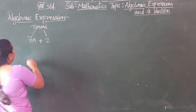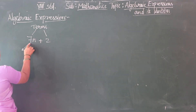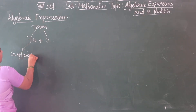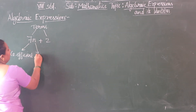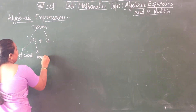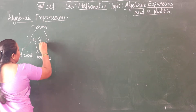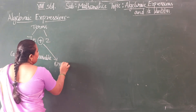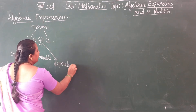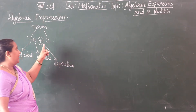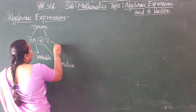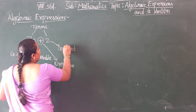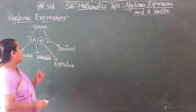And then we have a coefficient — 7 is a coefficient. And then n is a variable. And then this — the plus sign — we can say is an operation. And this 2 we can say is a constant.